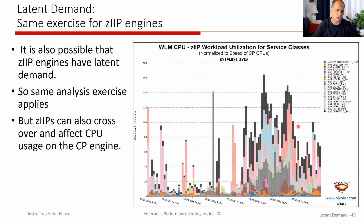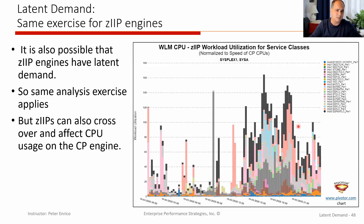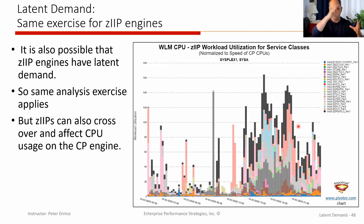I just want to point out as I close up: understand that when you look at latent demand, most of my presentation was focused on GP engines because those are the ones that tend to be the most expensive and our software is being charged based on them. But understand that you do have zip latent demand as well. The reason zip latent demand is going to be especially interesting is that it can result in crossover — the workload could have run on the zip engine but for whatever reason it couldn't run, and as a result...